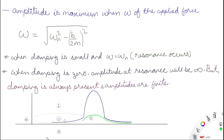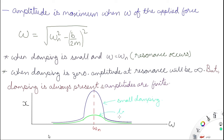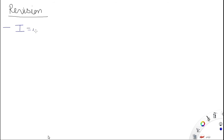In the resonance figure, ω is on the x-axis and displacement amplitude x is on the y-axis. When ω equals ω_n, maximum amplitude (resonance) occurs. The blue curve represents small damping — it peaks very high — while the green curve represents large damping, which does not peak as high.